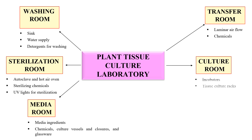The next area or room should be the culture room. This is the room which will contain all the cultures — you will incubate your cultures in this room. It must be equipped with incubators that maintain specific humidity and temperature conditions, and it should have tissue racks in which you will place your plant tissue cultures.